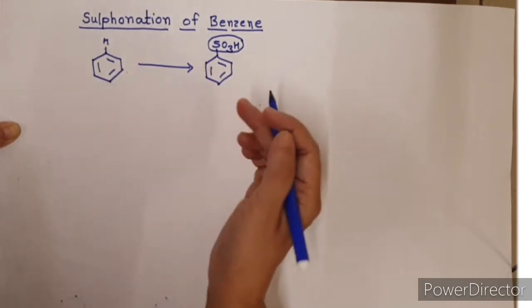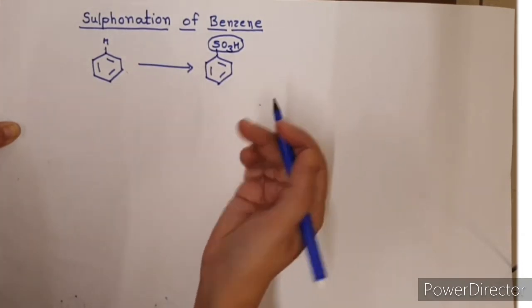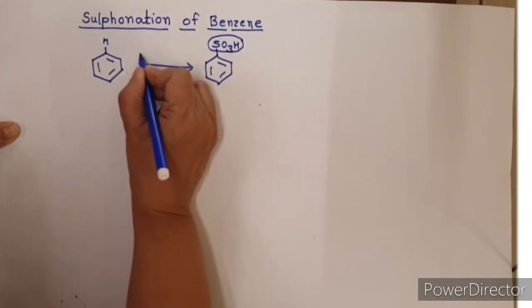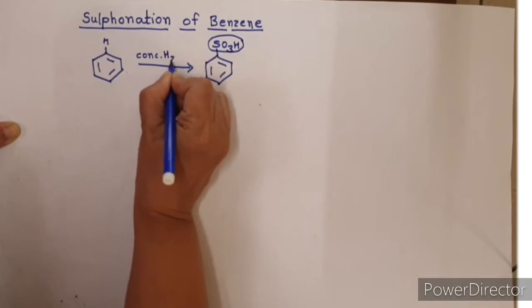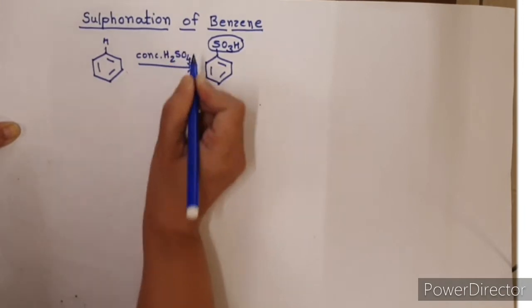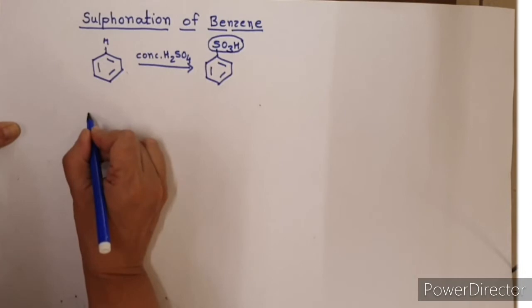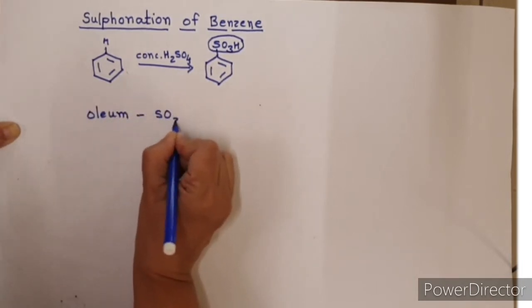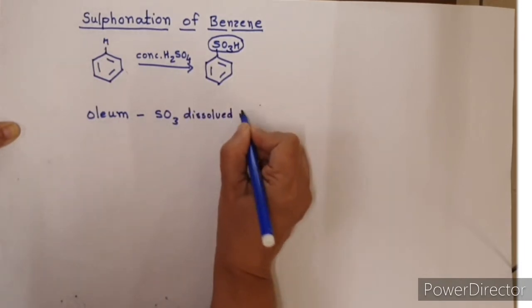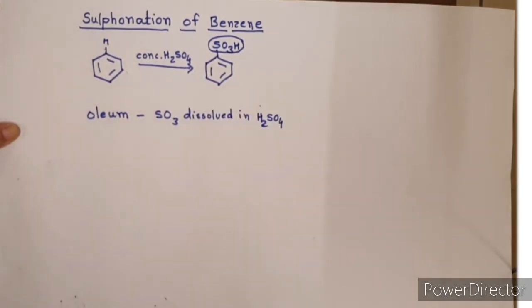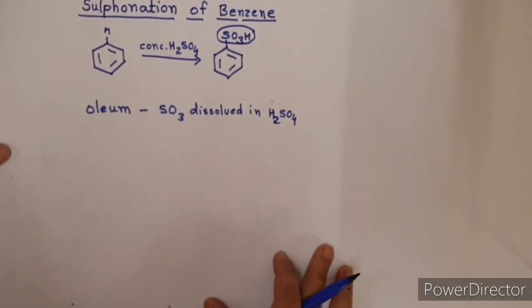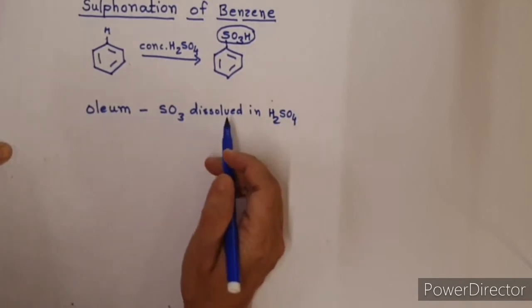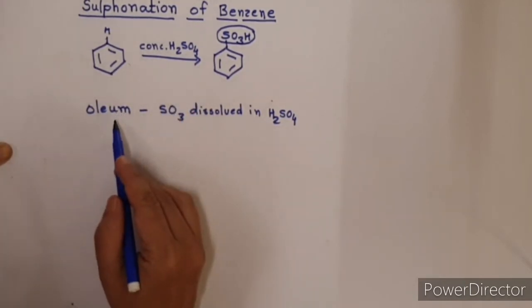For conversion of benzene to benzene sulfonic acid, we have to use a sulfonating agent. Which sulfonating agent can we use? We can use concentrated H2SO4 or we can use oleum. Oleum is SO3 dissolved in H2SO4. There are in fact many other reagents which can be used for sulfonation, but two most common are concentrated H2SO4 and oleum.